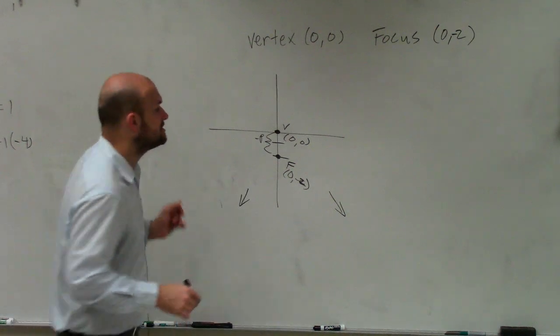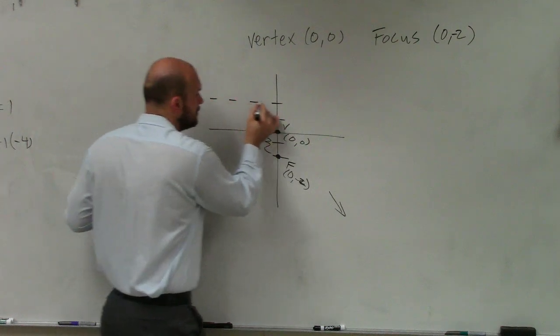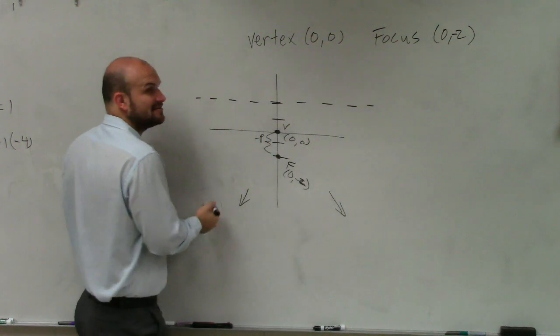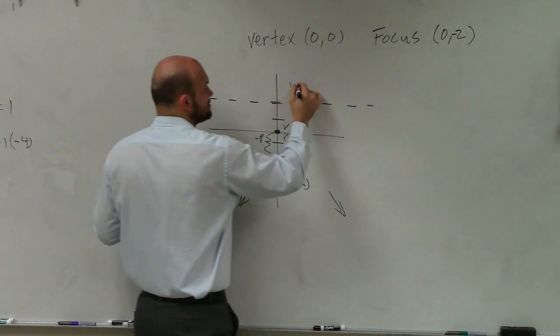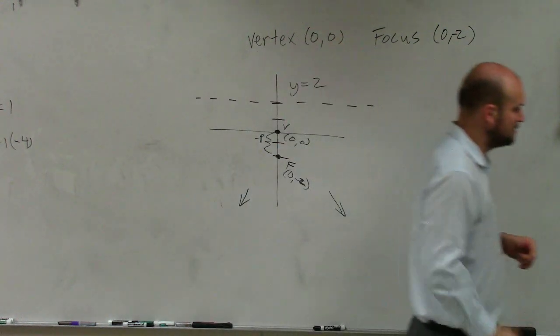Yeah. So what you can simply do is add 2. And I can now say this is a horizontal line, so y equals positive 2. All right?